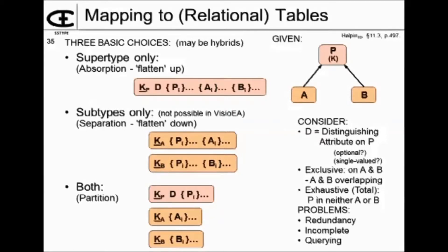What happens if it's not exhaustive on the supertype? In other words, there could be members of the supertype that aren't in any of the subtypes. What are you going to do if you pick subtypes only? You've got a problem, because you've got no place to store the supertype that's not in any of the subtypes. These are some of the kinds of considerations that you have to go through in deciding where you're going to store your tables.